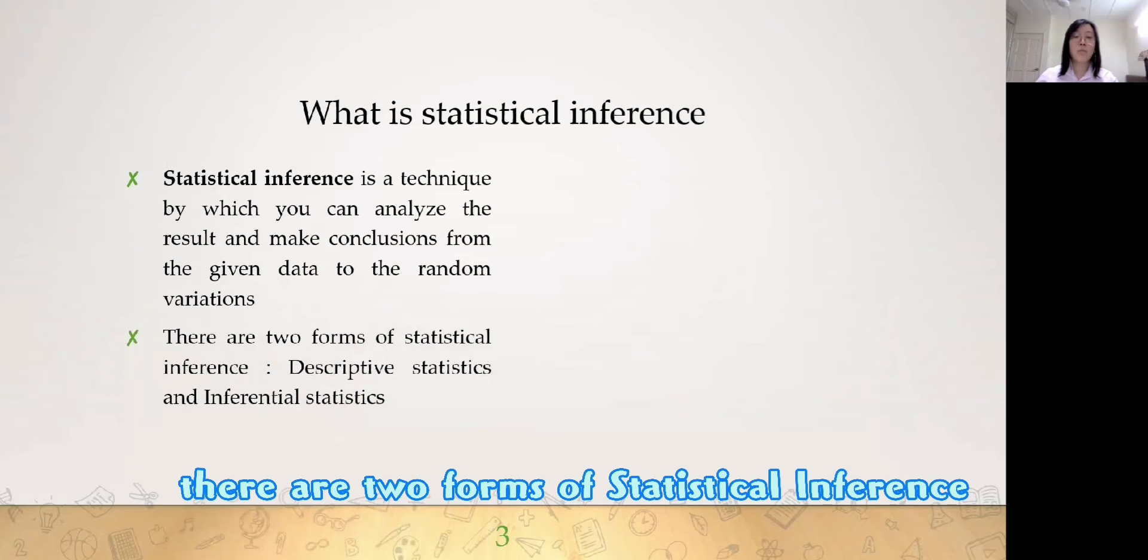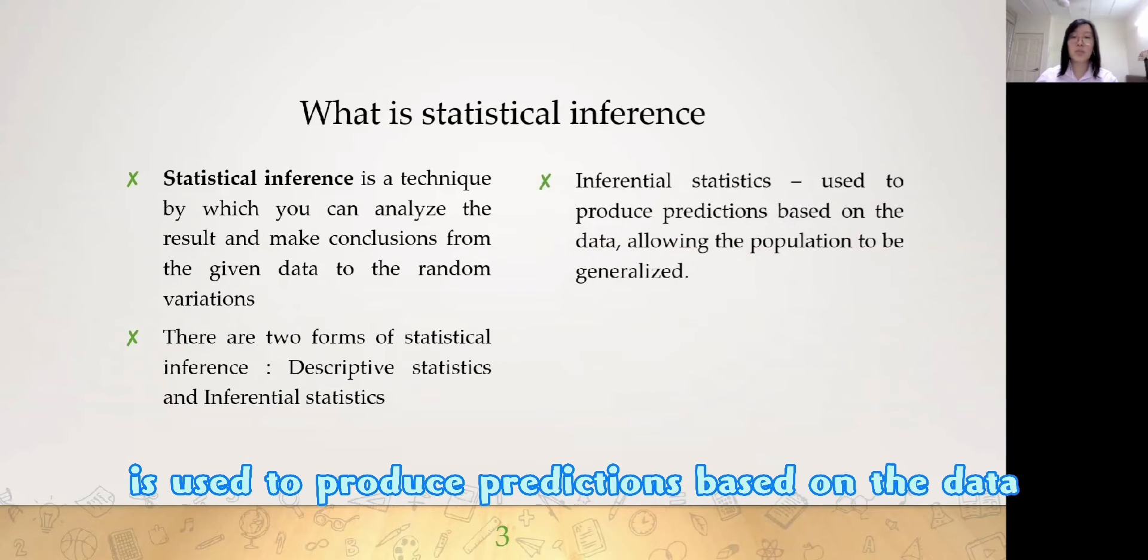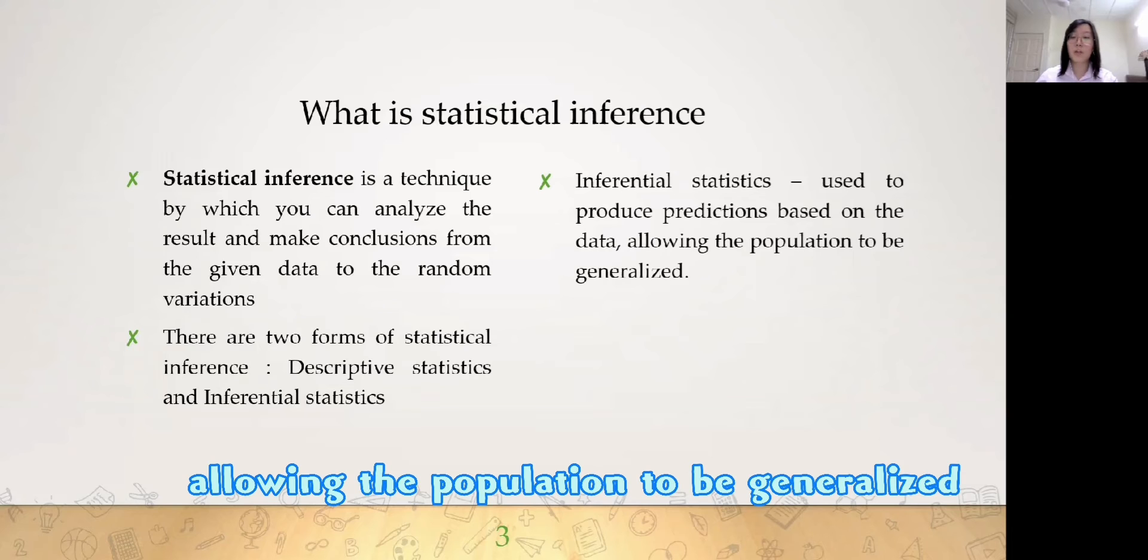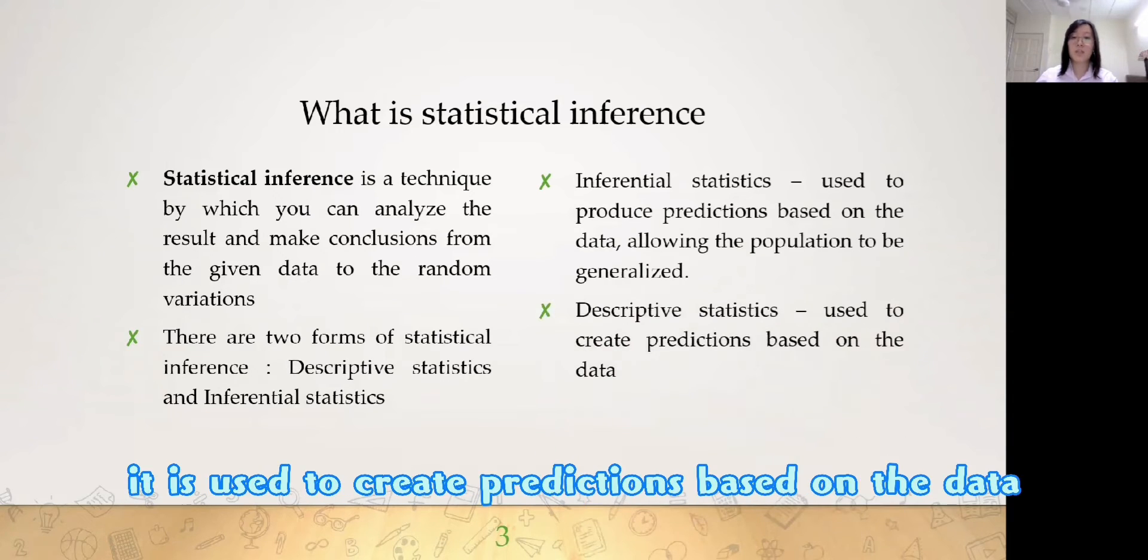There are two forms of statistical inference, descriptive and inferential. Inferential statistics is used to produce predictions based on the data allowing the population to be generalised. And for descriptive statistics, it is used to create predictions based on the data.